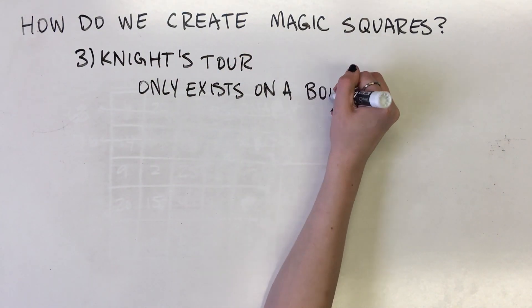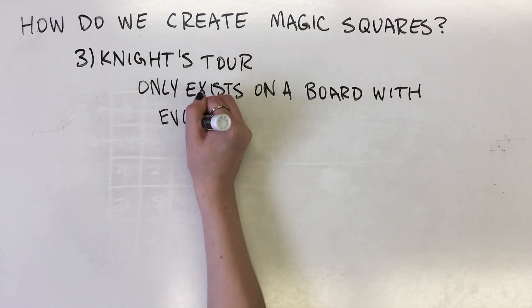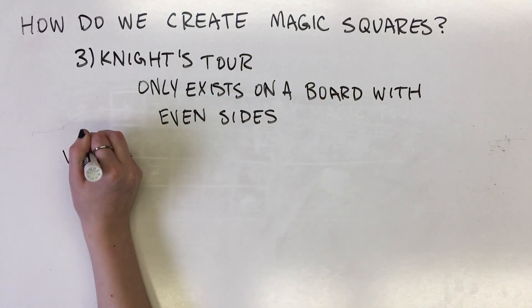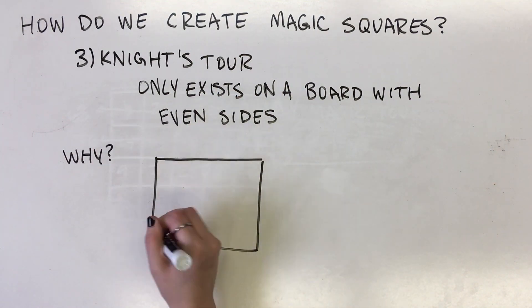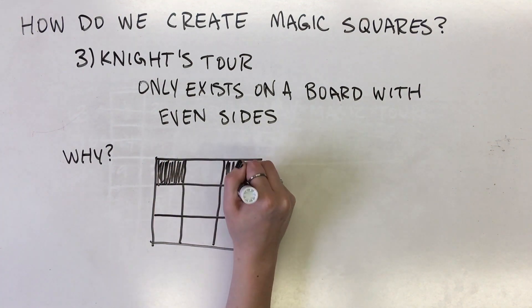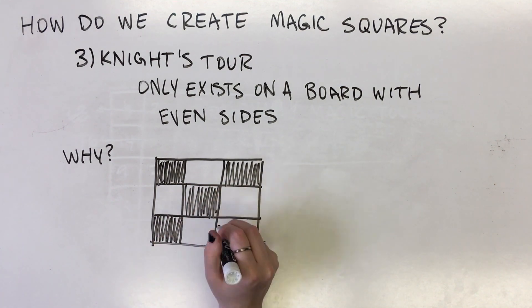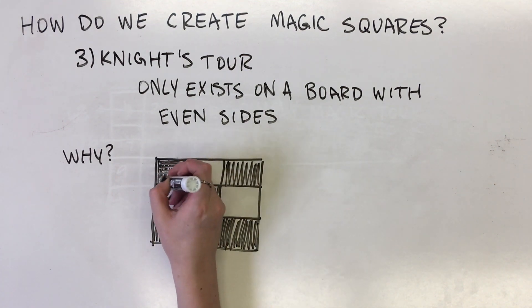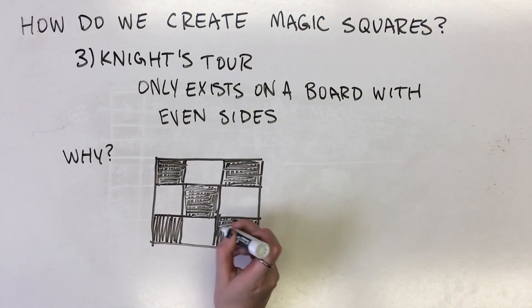A magic knight's tour is only possible on a board with both sides of even degree. Checking the cells on board white and black, it is a property of the knight that it always moves to a cell of different color to that on which it stands. All the cells of one color will be odd numbered, and all the other cells even numbered.